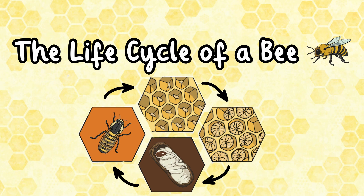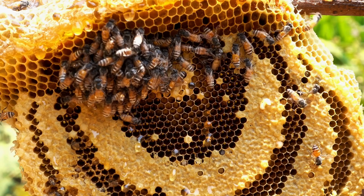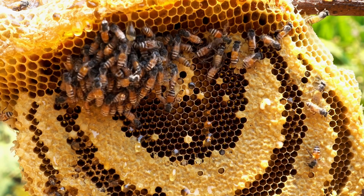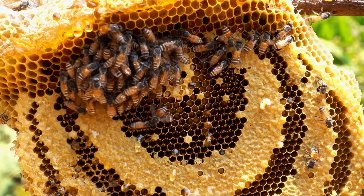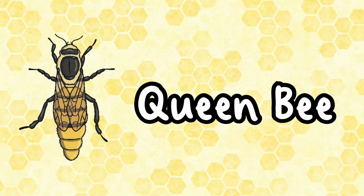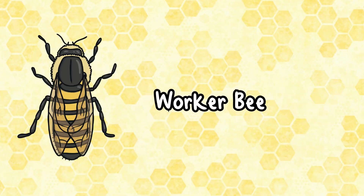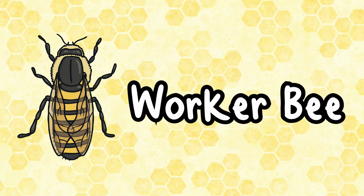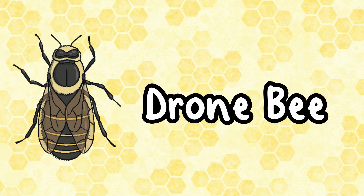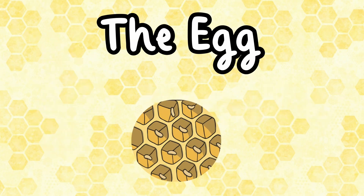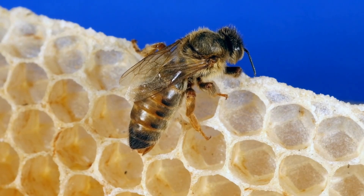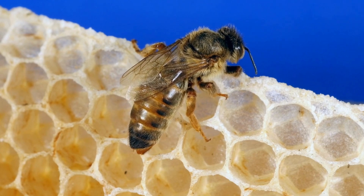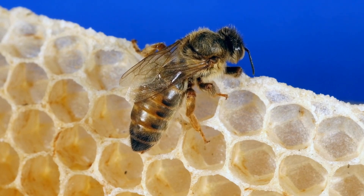The life cycle of a bee. In a beehive there are three different types of bee: queen bee, worker bee, and drone bee. The egg: the first stage in the life of a bee is when the queen bee lays